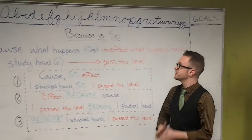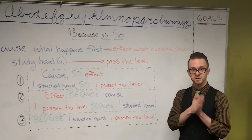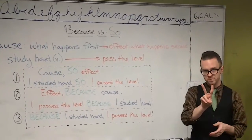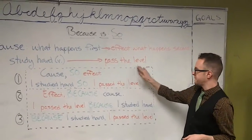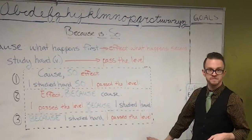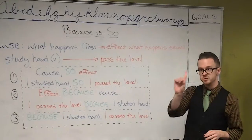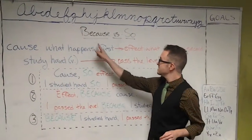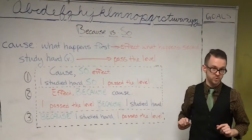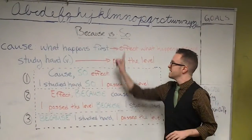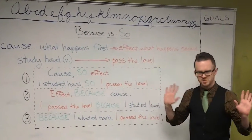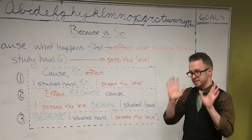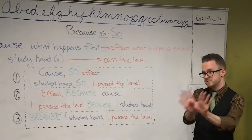When we express cause and effect in English, we use two different words depending on the order of the sentence. And these two words are 'because' and 'so.' I know it seems strange that we use two words, but it's really very, very simple.